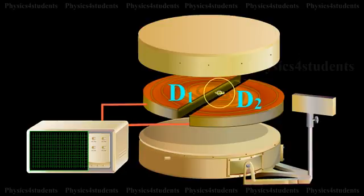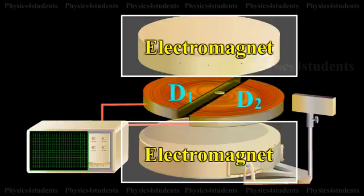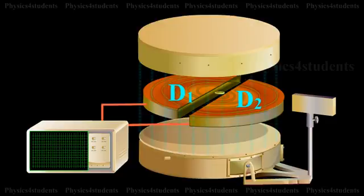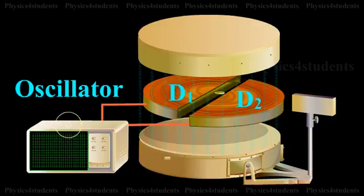They are placed between the pole pieces of a strong electromagnet. The magnetic field acts perpendicular to the plane of the D's. The D's are connected to a high frequency oscillator.